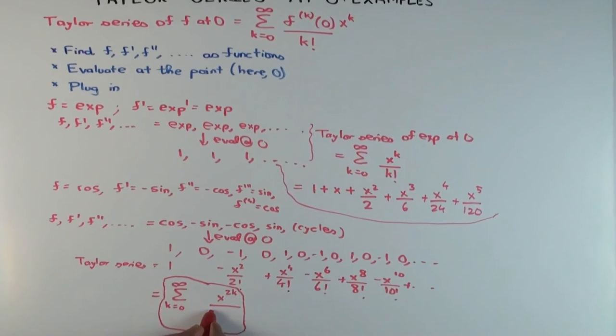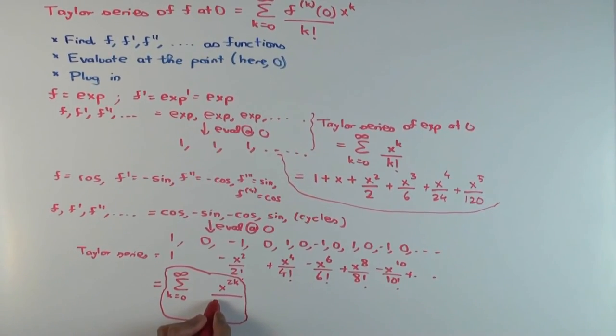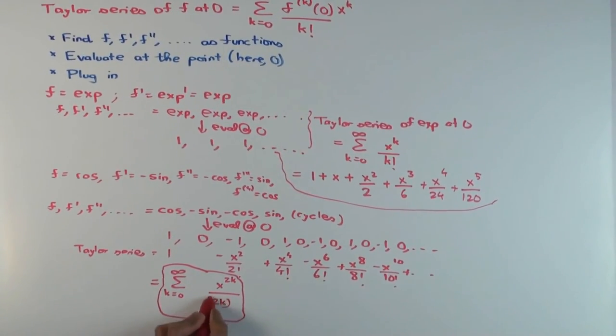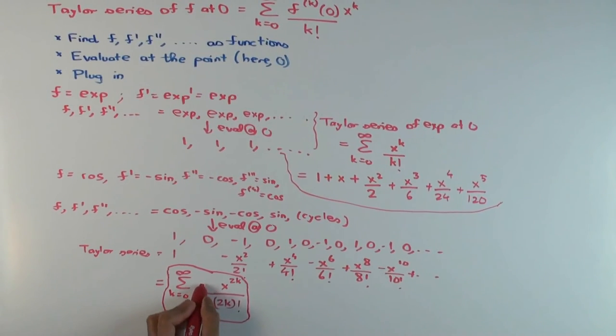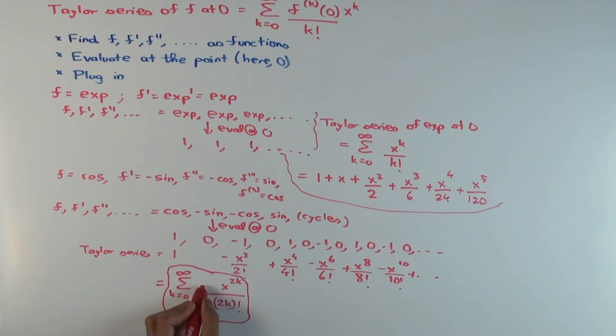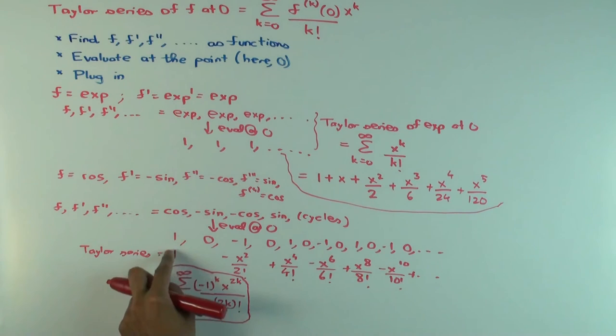What will be the coefficient? What will the denominator be? 2k factorial. And what do you put here to indicate the sign alternation? Negative 1 to the k. And you should check now that when you plug in k equals 0 you get negative 1 to the 0 that will give you the 1. When you plug in k equals 1 you'll get a minus sign, you'll get minus x squared over 2 factorial.